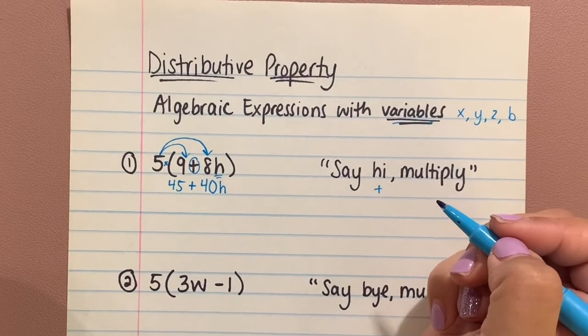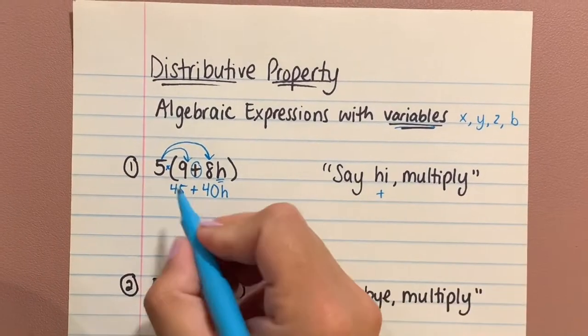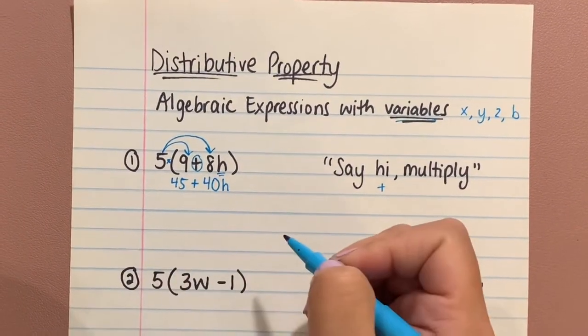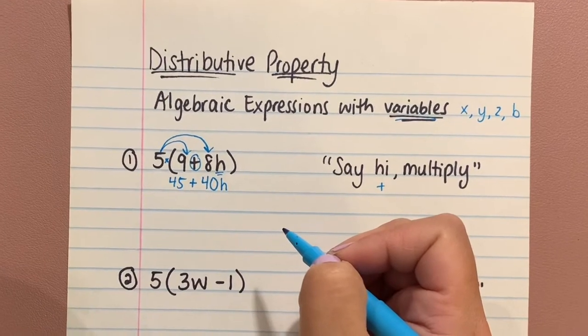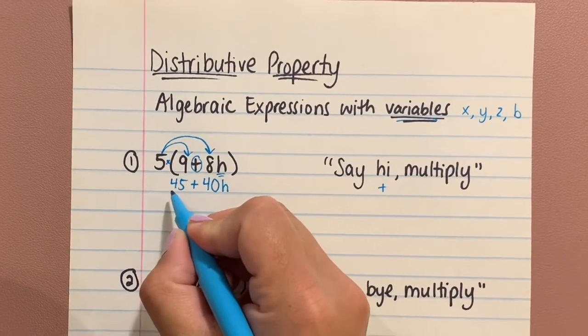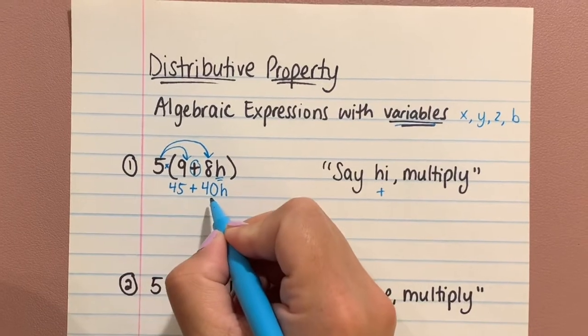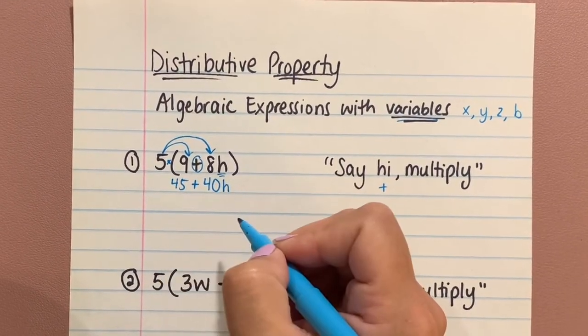A lot of the times you might get confused and want to add the 45 and the 40 together, but you don't want to do that because the 45 does not have the little baby H attached to it. The 40 does, so you want to keep them separate.